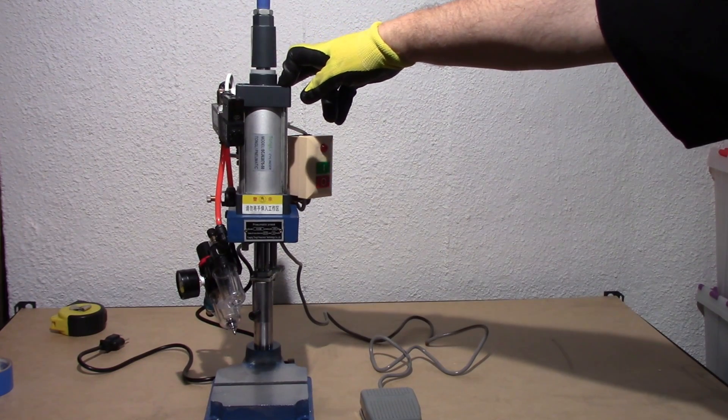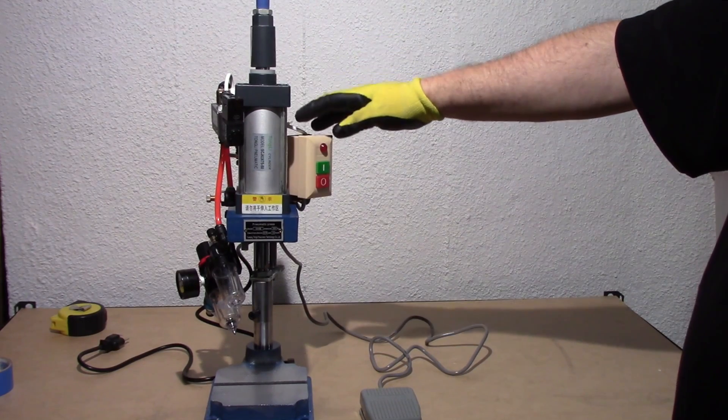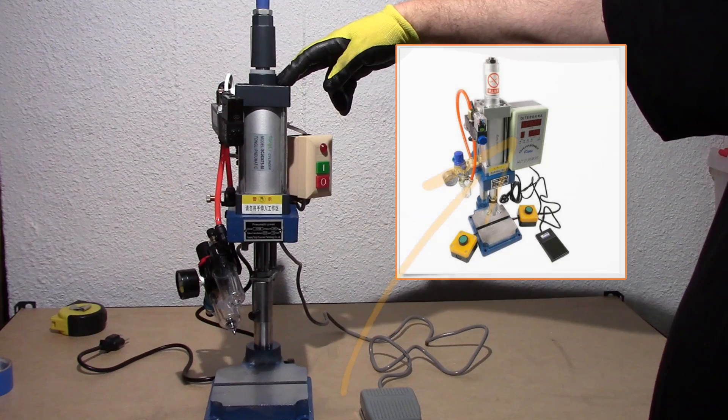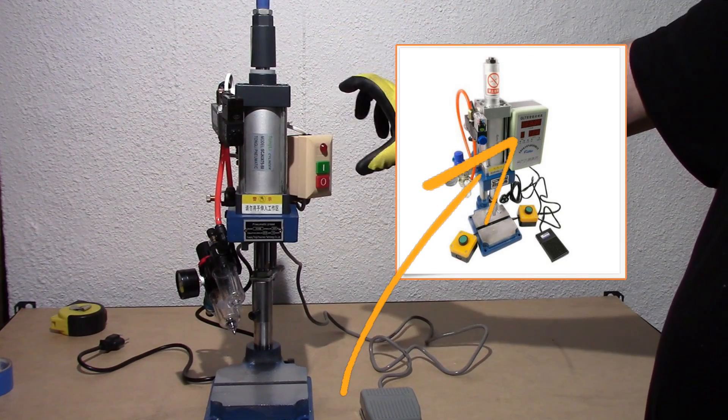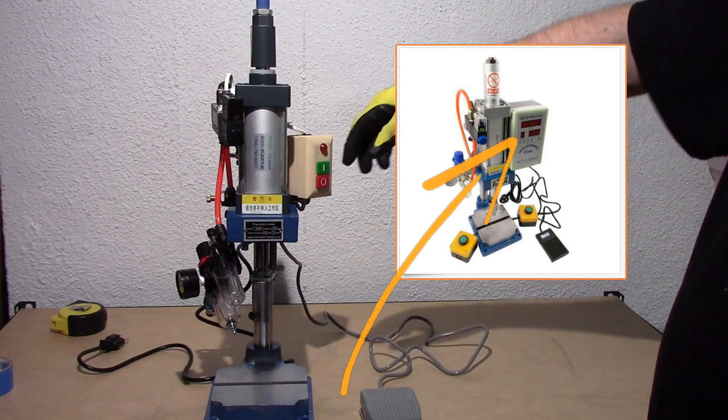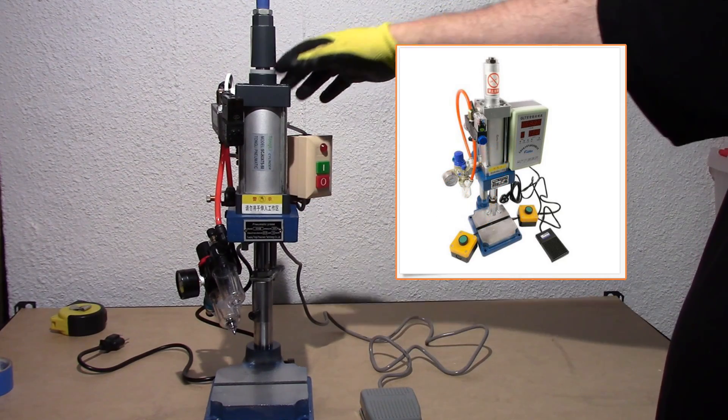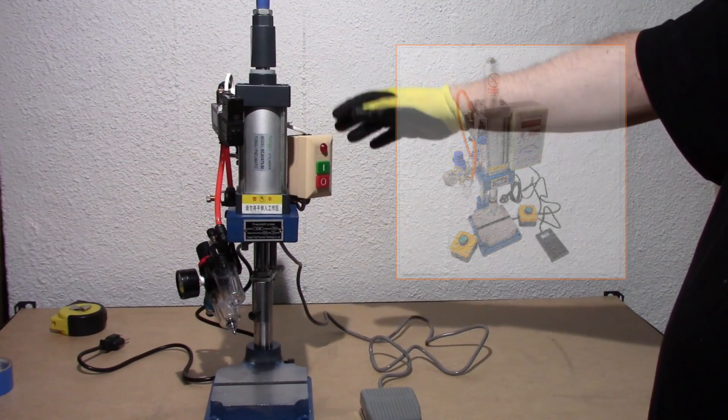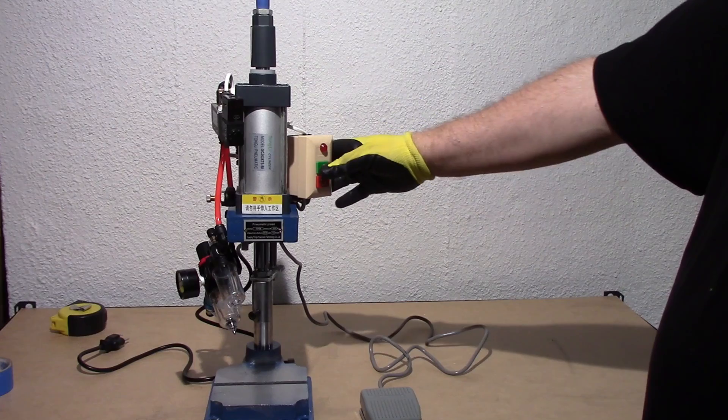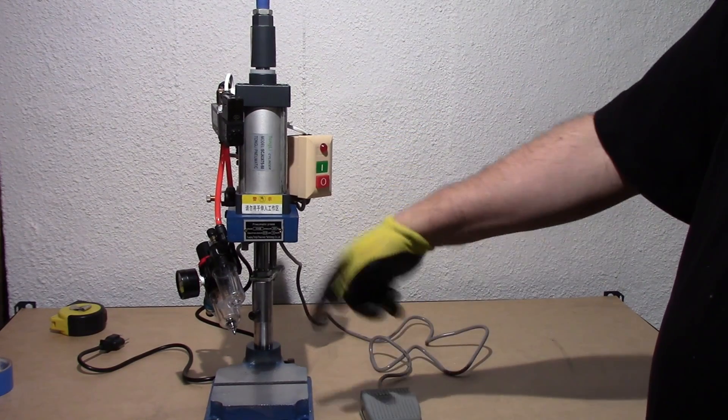There's another version out there that sells for about 250 to 300 bucks that has a Chinese control panel here. You can set it for the number of strokes and it counts. It must have an Arduino inside. Kind of a waste of money if you ask me, because the only thing this thing does is go up and down. With this one, basically you energize it, you push the button, plunger goes down, and that's about it.